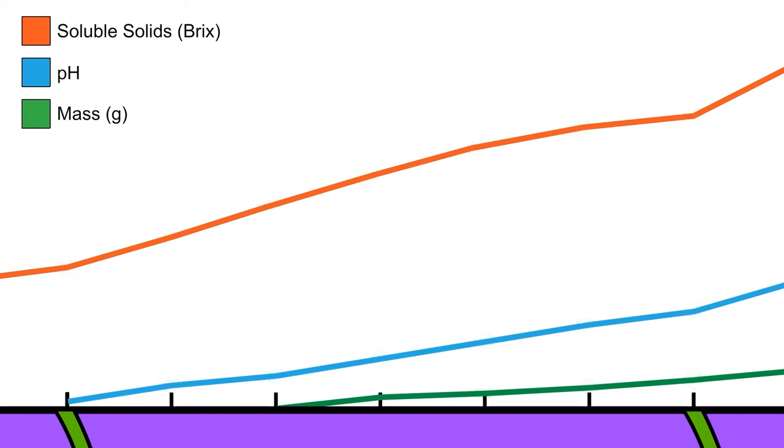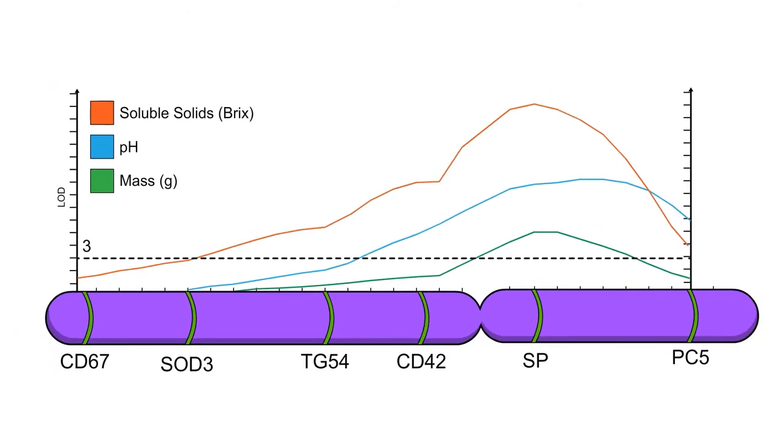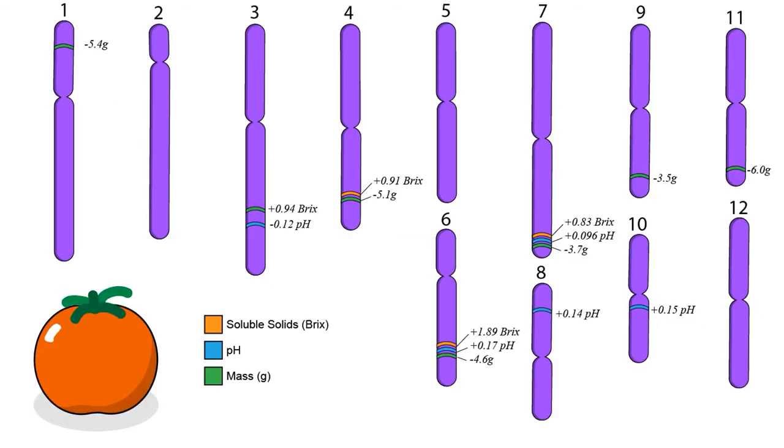An LOD score of 3 was considered significant, which meant a 1,000 to 1 chance that the proposed QTL existed. Finally, they estimated the effect of the most likely putative QTL using the maximum likelihood method, adapted by Lander himself. The researchers described the position and effect of 14 QTLs spread across the three traits.